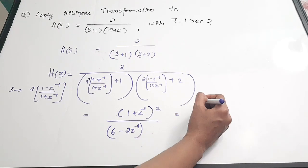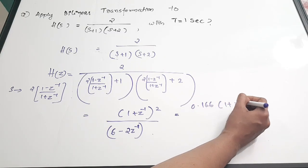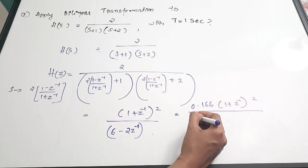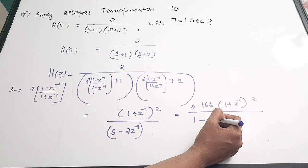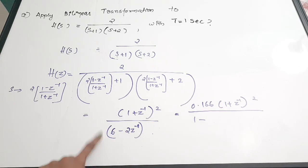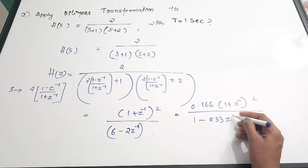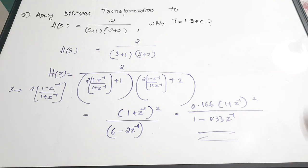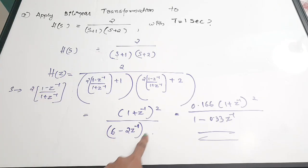You can cancel the 2 and 4 to get a 2 in the denominator, and taking the 2 inside gives (6 − 2z⁻¹) in the denominator. Then dividing numerator and denominator by 1/6 gives: H(z) = 0.166 × (1 + z⁻¹)² / (1 − 0.33z⁻¹). You can simplify to whatever extent you prefer — stopping at the cross-multiplied stage will still earn you more than 80% of the marks.